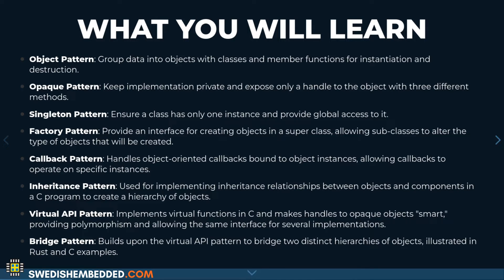After the object pattern, we're going to look at the opaque pattern. This pattern is just like the object pattern, but we keep even the data definition of our data structure private. We'll look at allocation techniques for the opaque pattern, and especially how we do that in C — where, unlike C++, we can't just use new or delete, so we need multiple different methods of allocating those opaque objects.